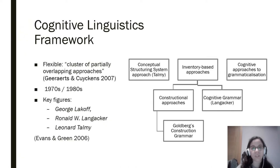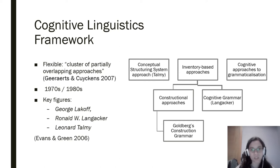This branch of linguistics is concerned with how the human mind stores and processes language, and it is called cognitive linguistics. This framework is a collection of approaches to language and it was developed in the late 1970s, mainly by Lakoff, Langacker and Talmy.